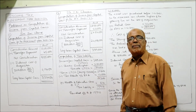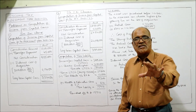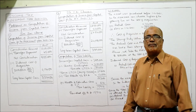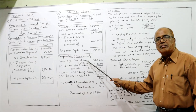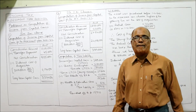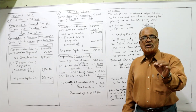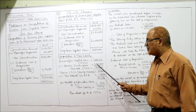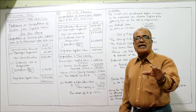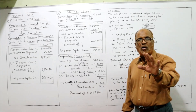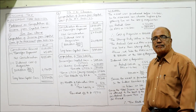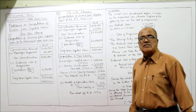3,89,000 is the long-term capital gain. Now computing tax liability: LTCG is 3,89,000. Deduct basic exemption limit of 2,50,000 for non-senior citizen. Taxable LTCG is 1,39,000. Long-term capital gain is taxed at a flat rate of 20%. So 20% of 1,39,000 = rupees 27,800.